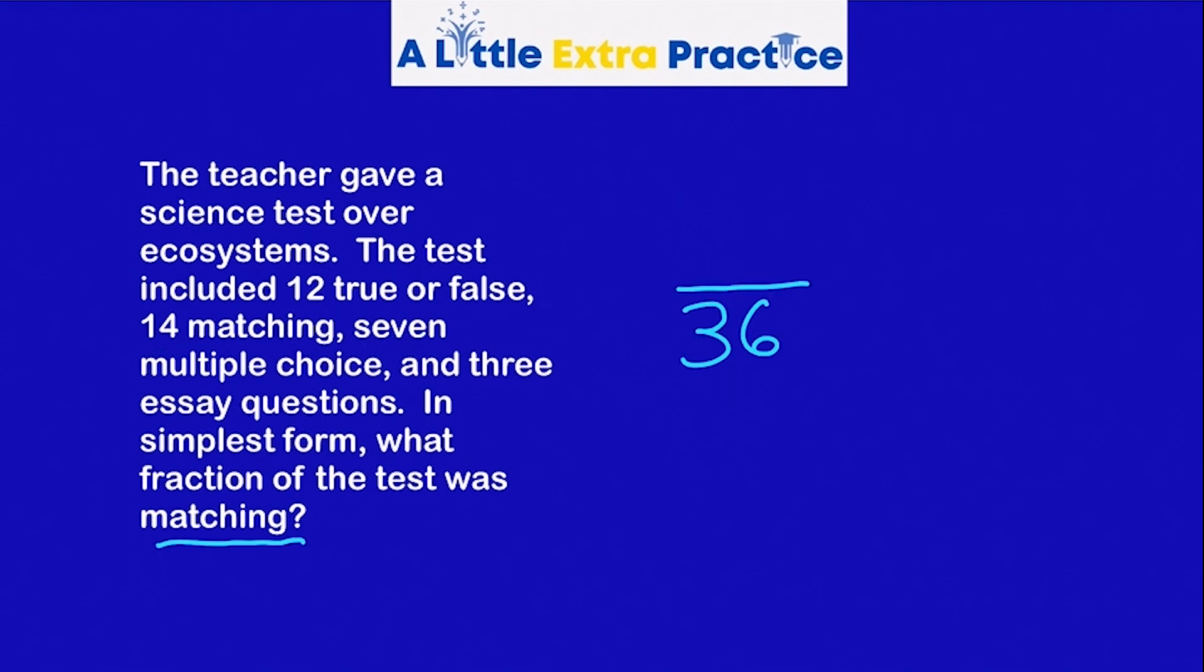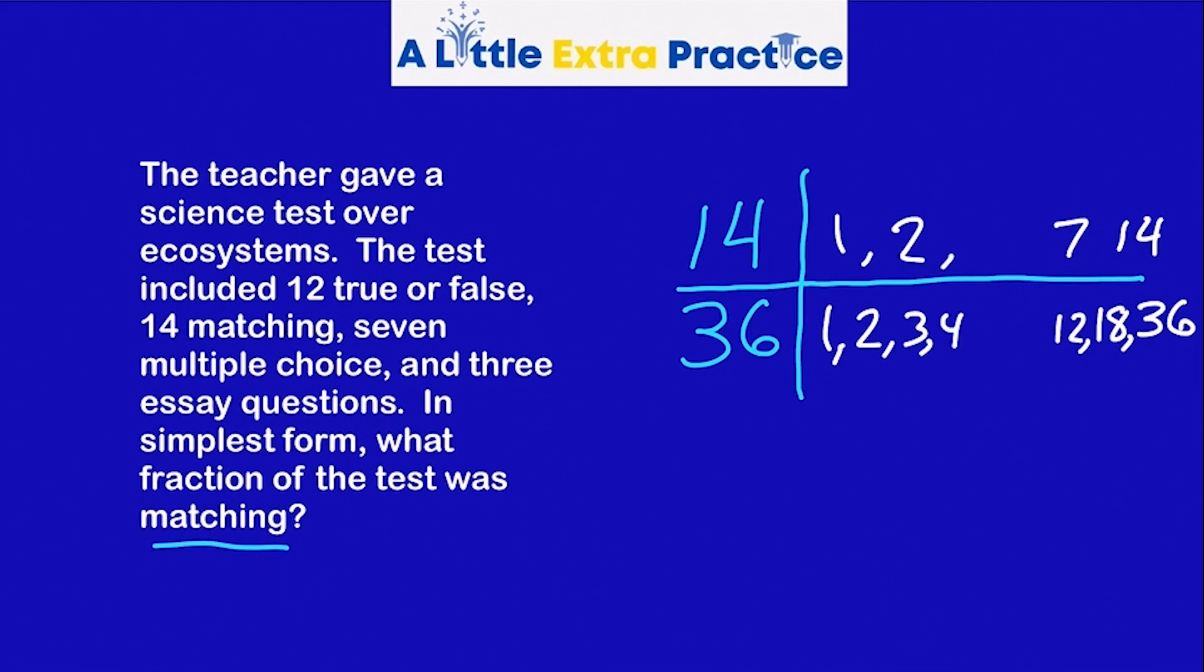That will be our denominator. The question asks, what fraction of the test was matching? So of the 36 problems, 14 were matching. So let's simplify. Factors of 14: One times 14, two times seven. And that's it. Factors of 36: There's going to be a lot of them because it's a multiple of 12. Well, two times 18, three times 12, four times nine, and then six times six. They share a one, common factors they share a two.